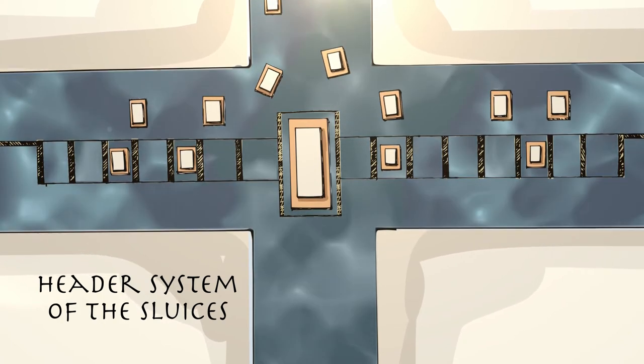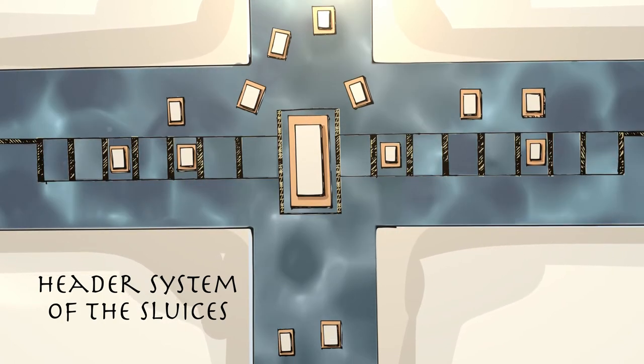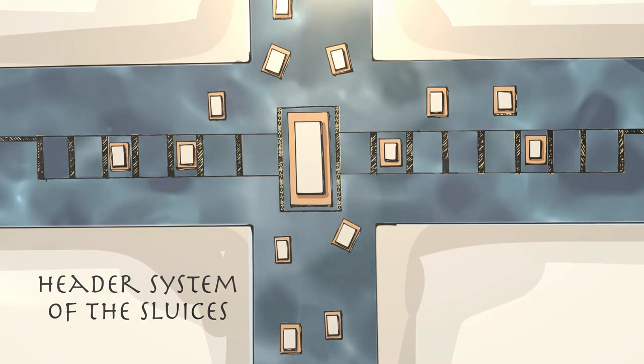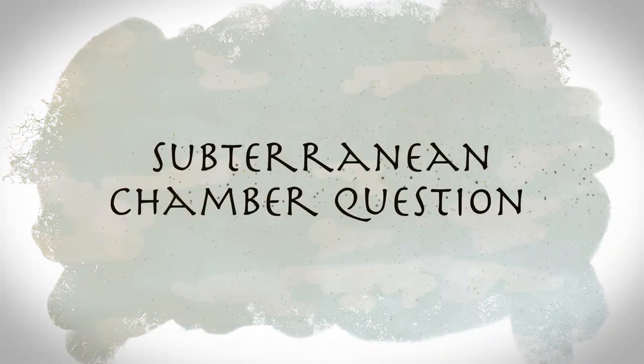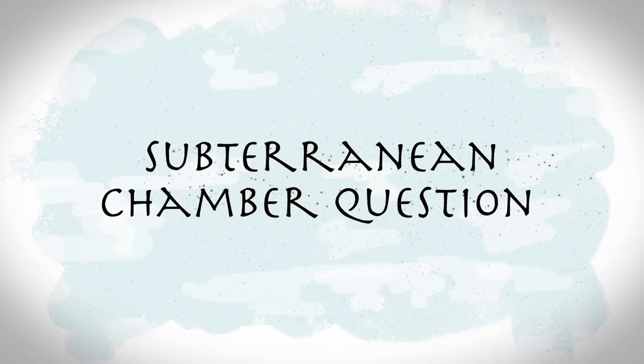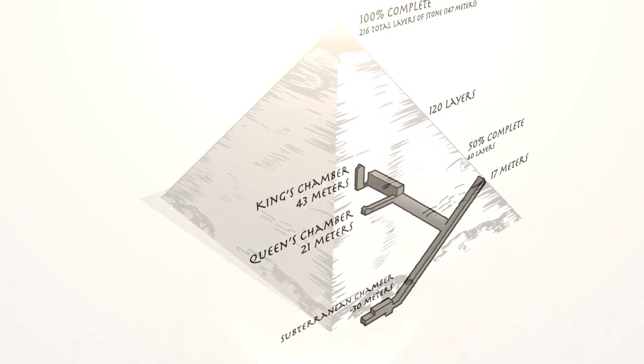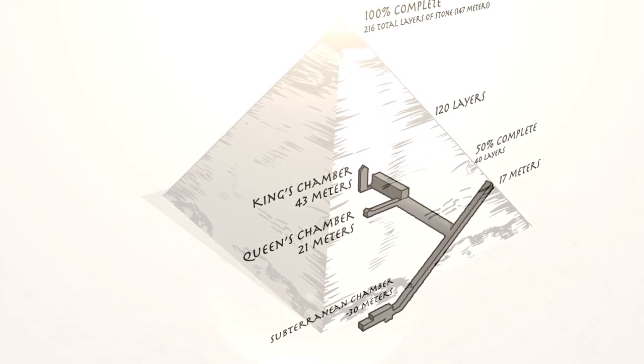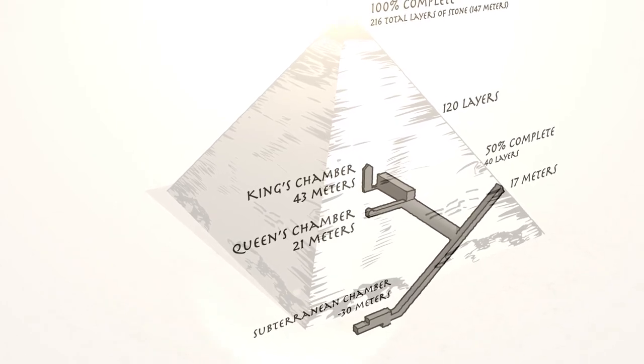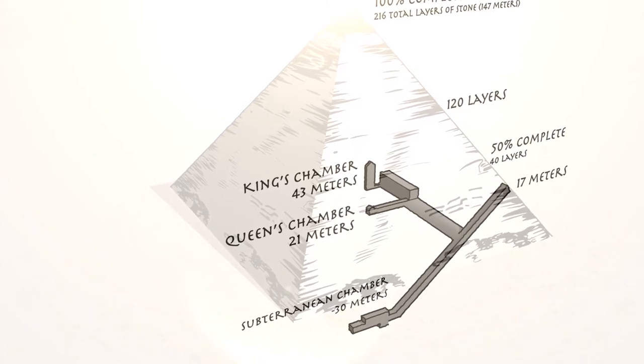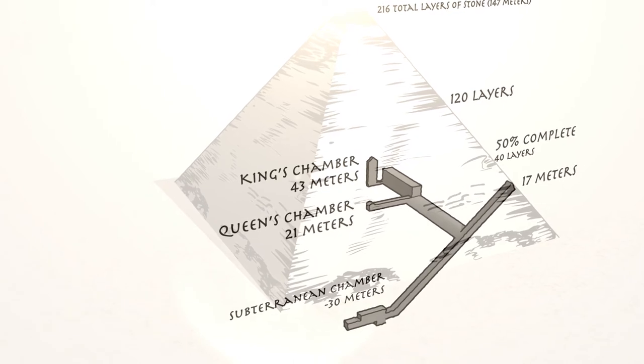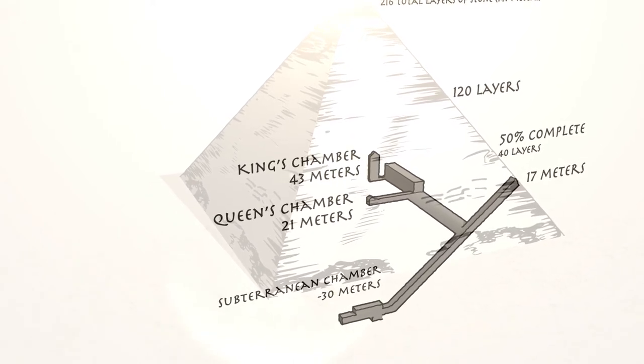The pyramid's base was precisely leveled with water, and every layer was verified by the same method. Many scholars question why the subterranean chamber was never completed. This theory suggests workers began construction on the subterranean chamber after the Great Pyramid was finished. If the chamber had been present, the constant water used during construction would have flooded the area consistently.